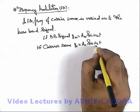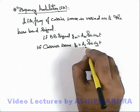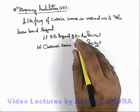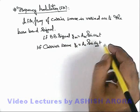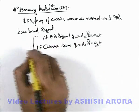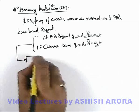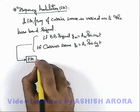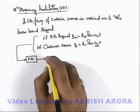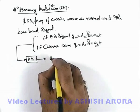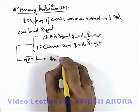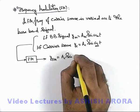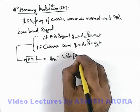Here in frequency modulation, we don't change the amplitude of the carrier wave, but the frequency of the carrier wave is modified by mixing with the baseband signal. So if the two signals are supplied into a frequency modulator, the frequency modulation output y_FM is given as A_c sine of the modified frequency omega_c, which can be written as 2 pi times...